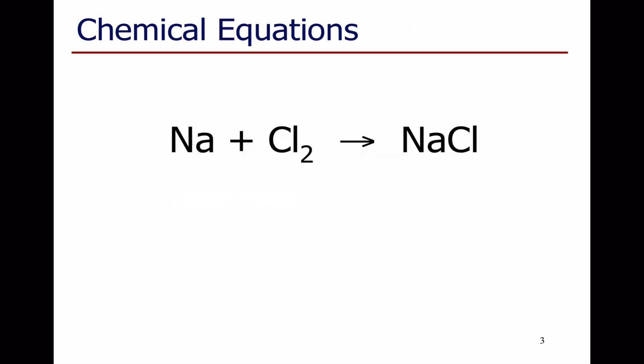So let's go back to our reaction between sodium and chlorine. We've rewritten as Na plus Cl2 goes to sodium chloride, NaCl. On the left of the arrow, we have what we start with, sodium and chlorine. And on the right of the arrow, we have what we end up with, NaCl, sodium chloride.